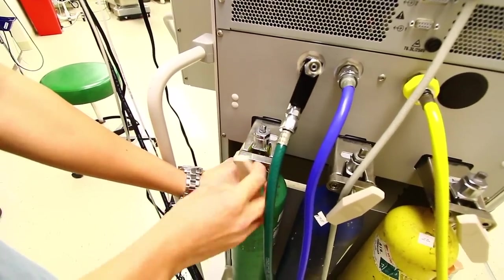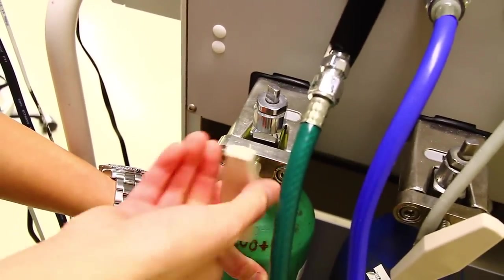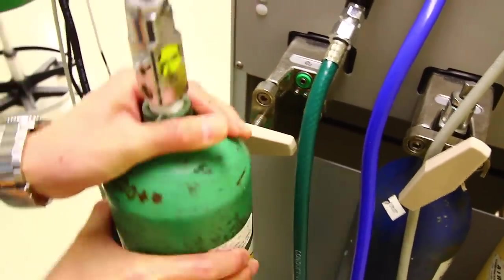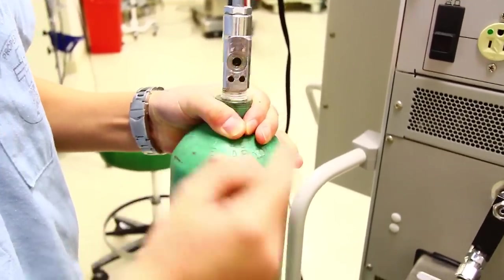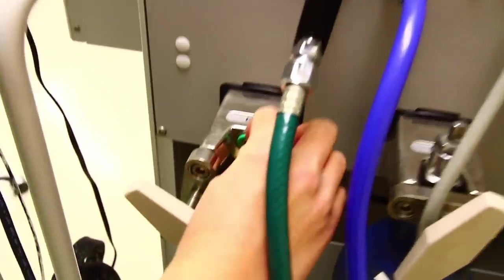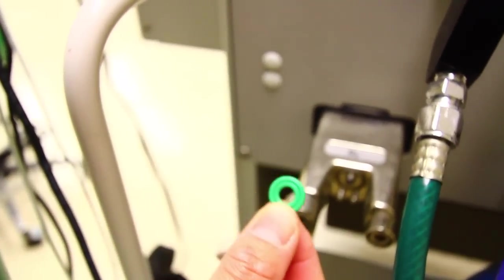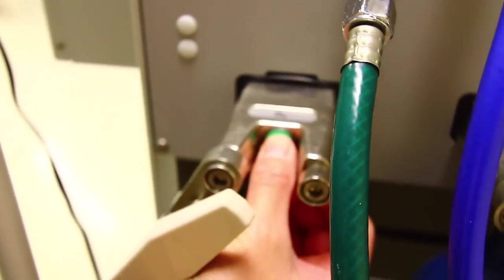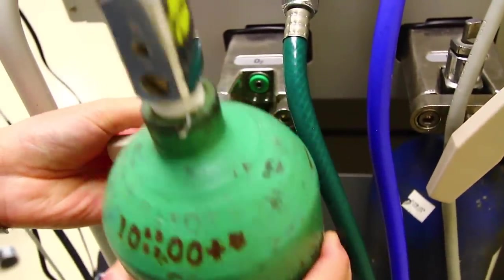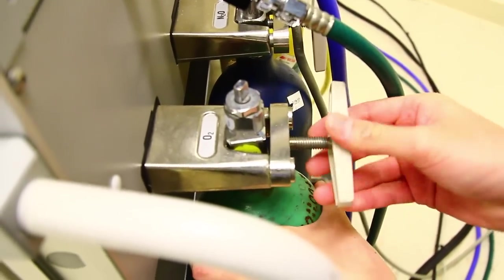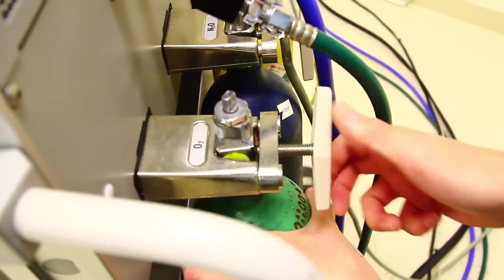To remove the oxygen tank, turn the handle counterclockwise. Remove the tank. Notice the pin index safety system. Now you want to check the O-ring for integrity and replace it. Now reinsert the oxygen tank and align the pin index safety system. Replace the latch and turn the handle clockwise until hand tight.